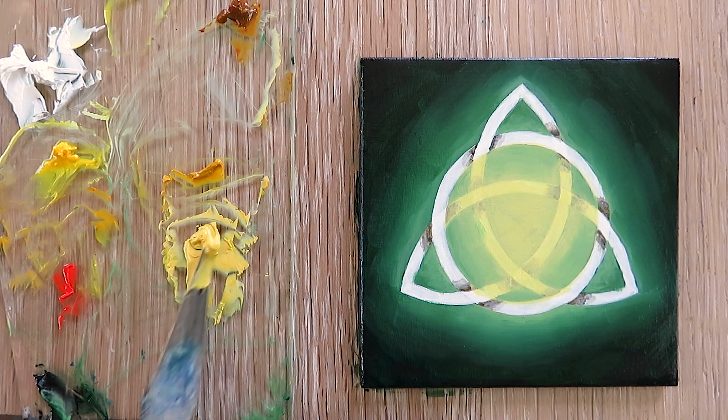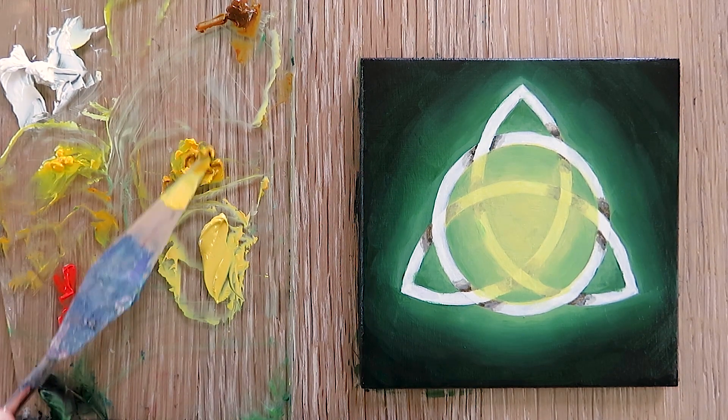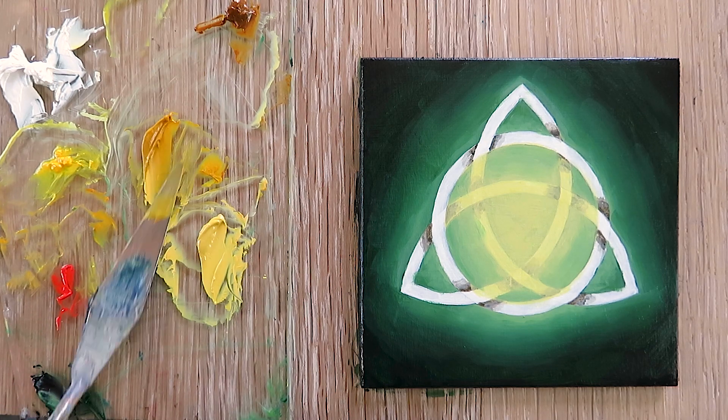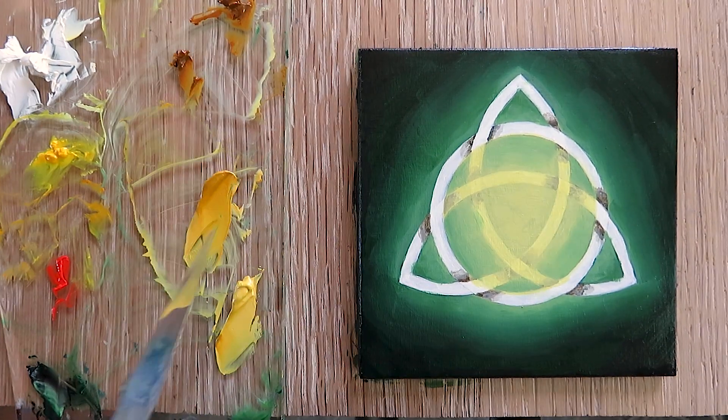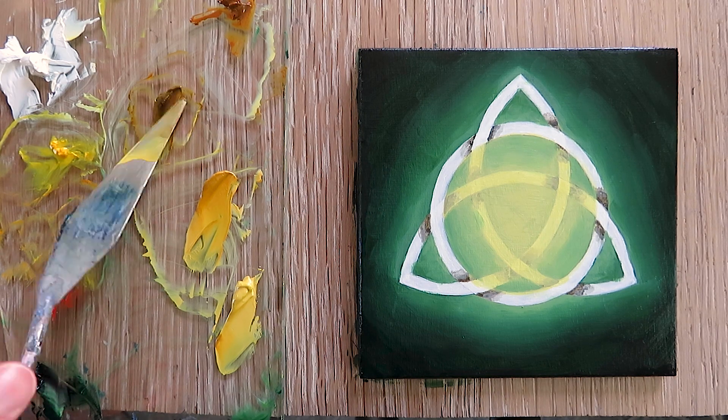For the light color, we grab a bit of our mid-tone color and add white to it as well as more cadmium yellow pale hue. For our shadow color, we mix raw sienna with a bit black and cadmium yellow pale hue.